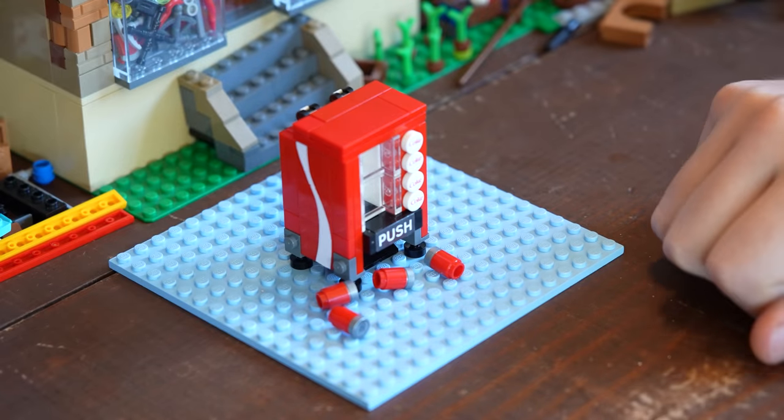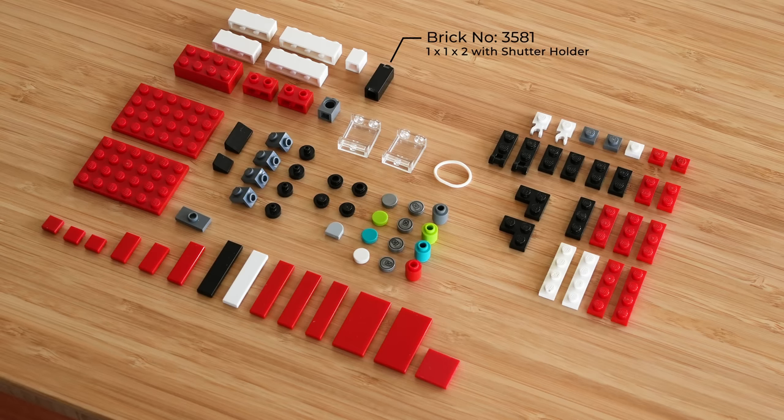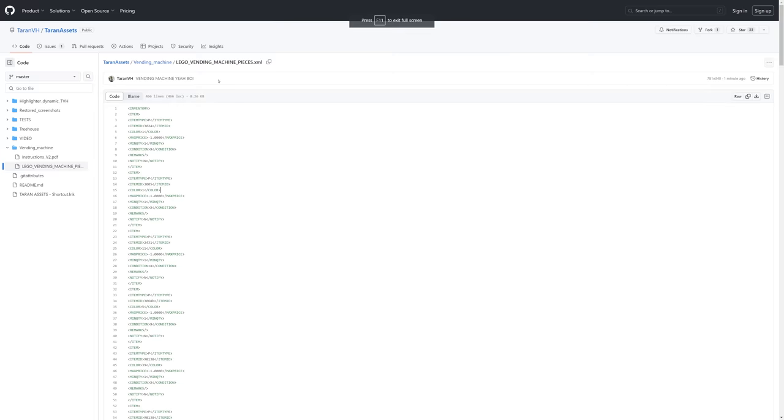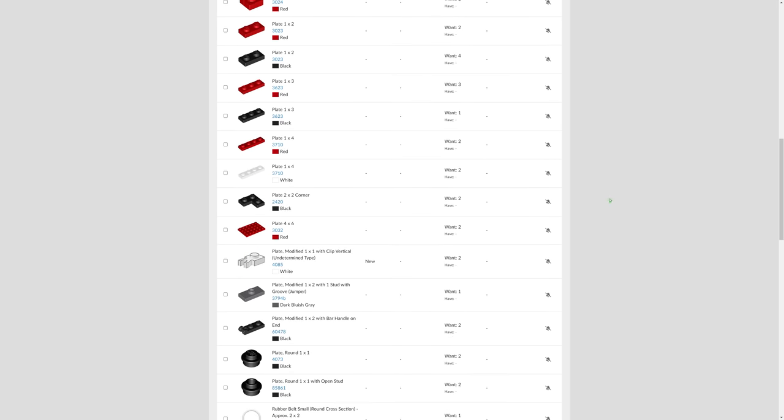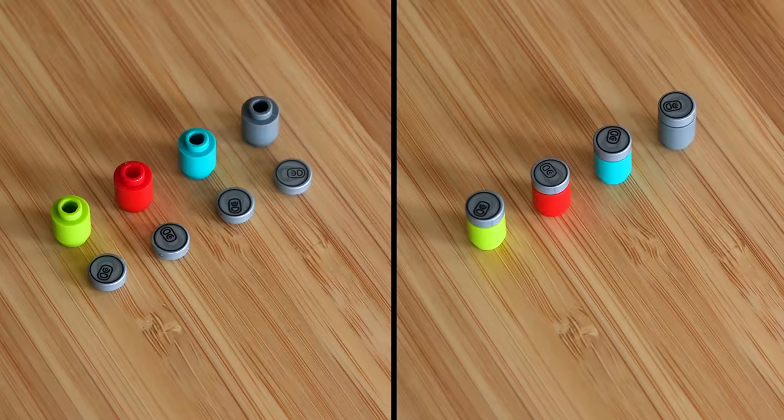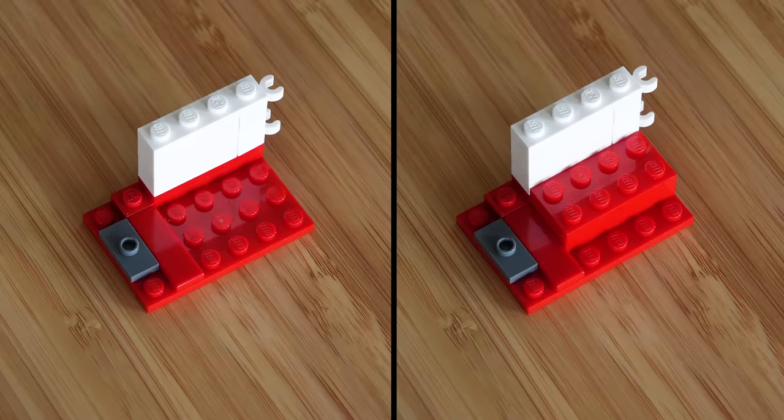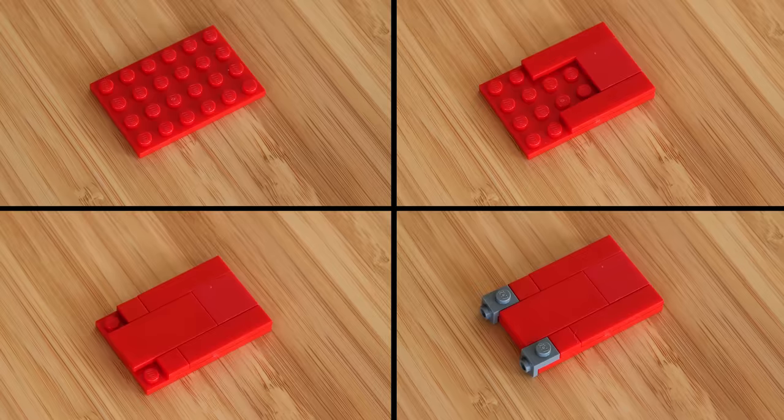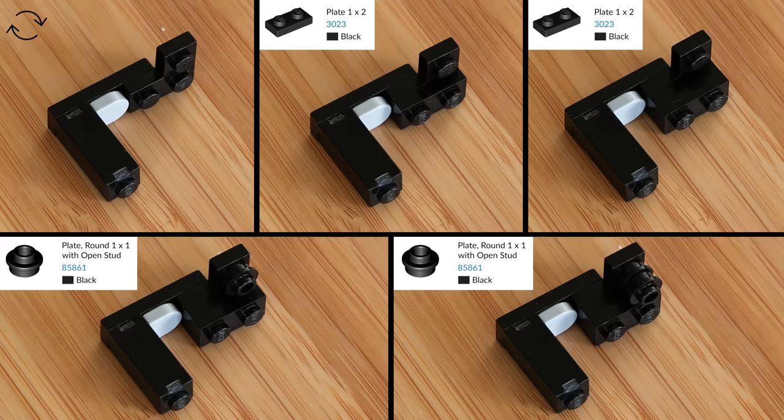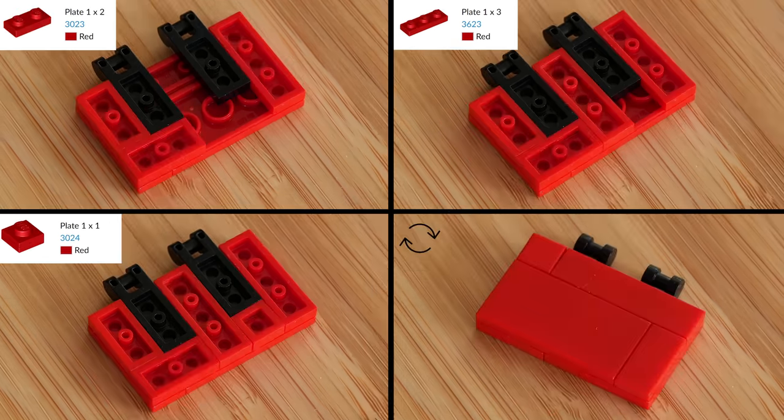All right. Now for the instructions. First up, here's all the pieces that you will need to build this. There's also an XML file linked in the description that you can plug into BrickLink if you want to see them in that format. Next up, we have the video instructions. I know this is going too fast. Don't worry, you're supposed to pause to look at these. But if you don't want to do that, there's also a PDF linked in the description. And finally, just for fun, really, here's a stop motion video of the thing being built.